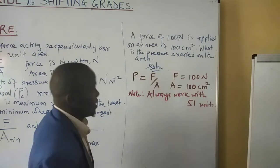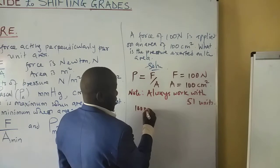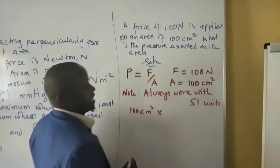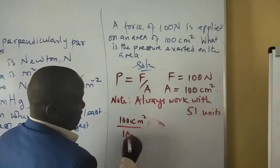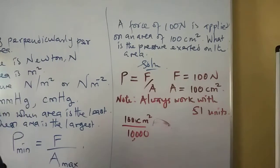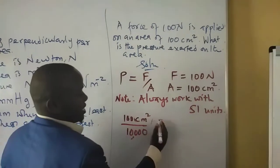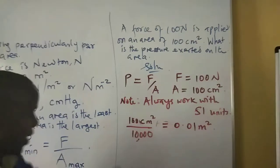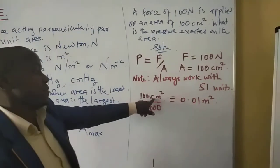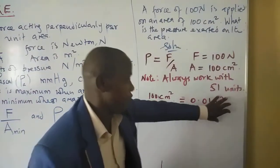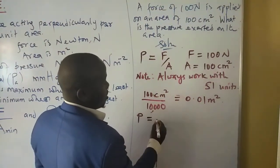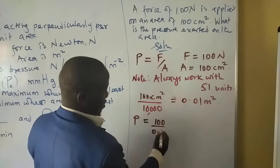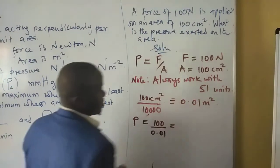Even though cubic centimeters are units of area, they are not the SI unit in physics. Therefore we change 100 centimeters squared into meters squared by dividing by 10,000, giving us 0.01 meters squared. Now instead of centimeters squared, we work with area already in SI units. Our pressure will be: force of 100 Newtons divided by area of 0.01 square meters.